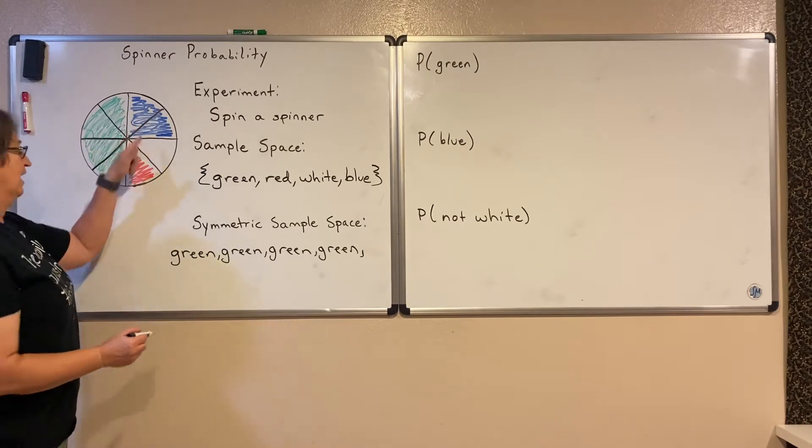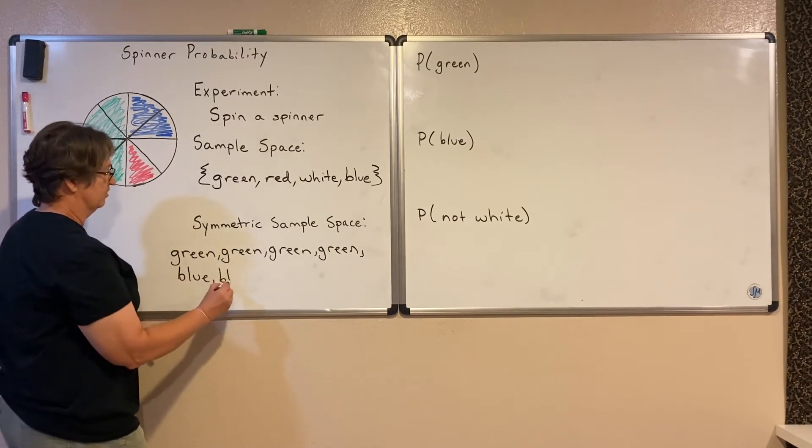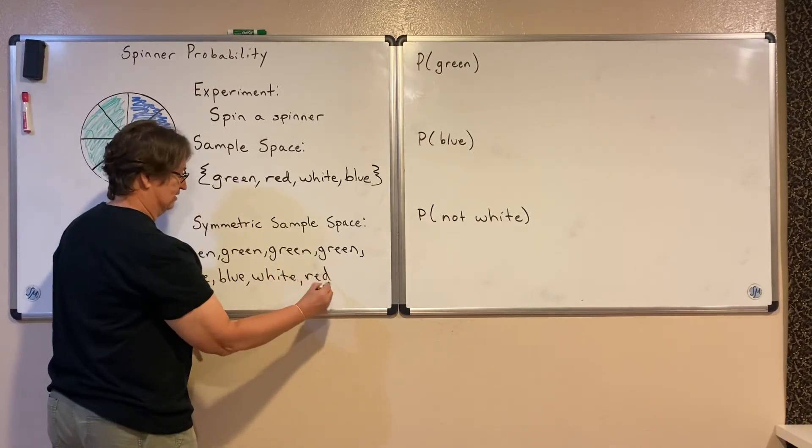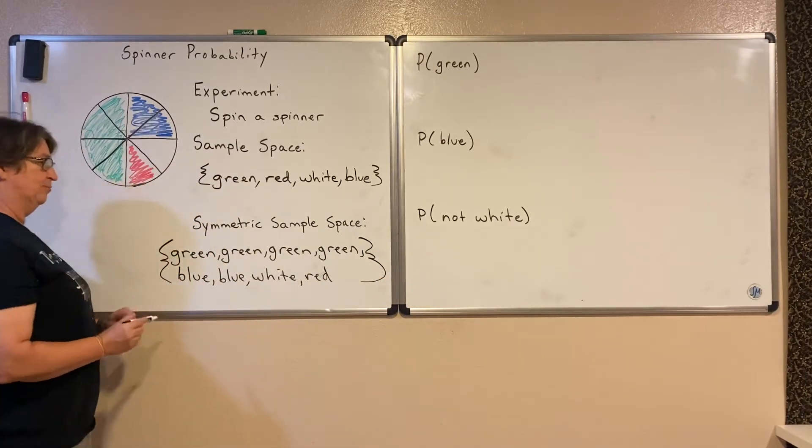I need green four times, I need blue two times, I need white one time, and I need red one time. That is my symmetric sample space.